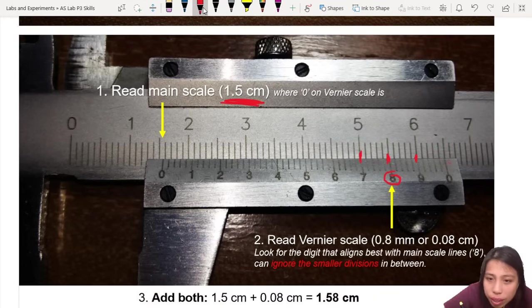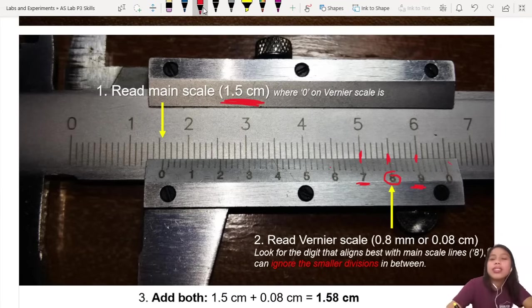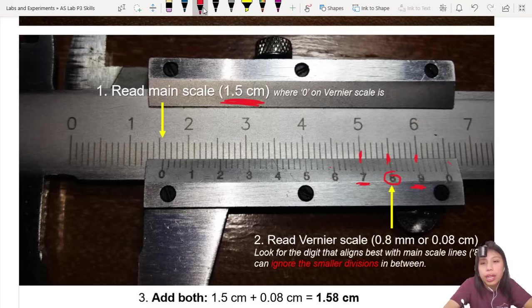Hmm, this one is a bit off. 6 is nah. So it could be 8, 7, or 9. There's an uncertainty there. Okay? And you're asking, miss, how about all the small, small one in between? You need to check, ah? Like all these ones.